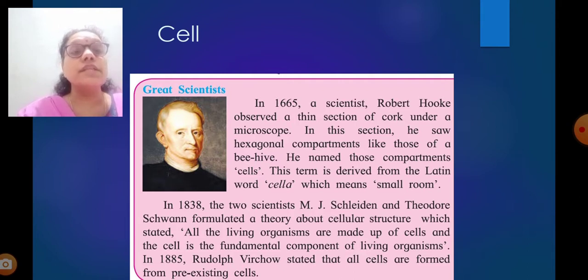In 1838, the two scientists M.J. Schleiden and Theodore Schwann formulated a theory about cellular structure, which stated all living organisms are made up of cells and the cell is the fundamental component of living organisms. In 1885, Rudolf Virchow stated that all cells are formed from pre-existing cells.